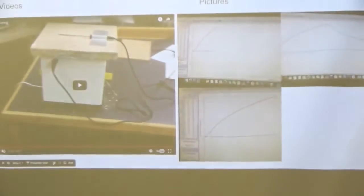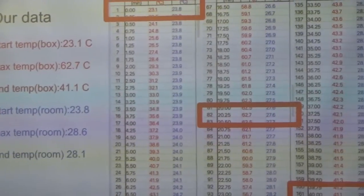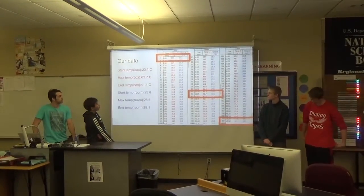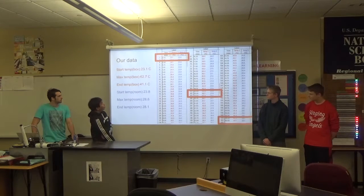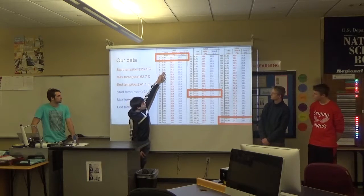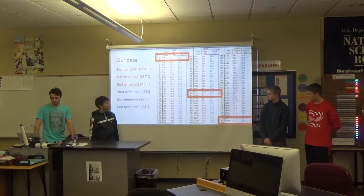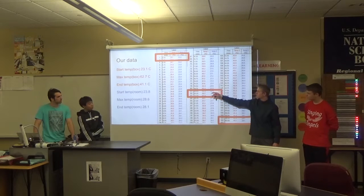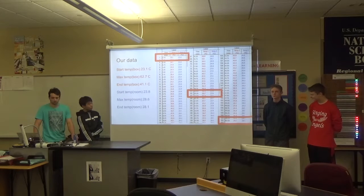We chose to use sawdust in it because we thought that would be a good idea. Our start temperature was 23.1 Celsius. The max temp was 62.7 Celsius, and the end temp was 41.1 Celsius. You can also see it heated up the area around the box — started at 23.8, got up to 27.6, and made it up to 28.1.